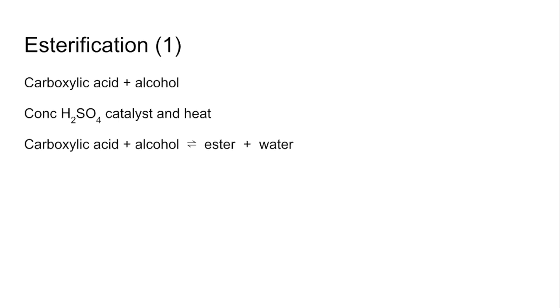So moving on now to making esters and that's known as esterification. Actually three ways we can do this. So go through each one with a slide. So the first way we can do it is to react a carboxylic acid with an alcohol. This is the most common way to make an ester. You need a concentrated sulfuric acid catalyst and you need to heat it. And so the reaction, carboxylic acid plus alcohol, it's a reversible reaction and makes ester plus water.